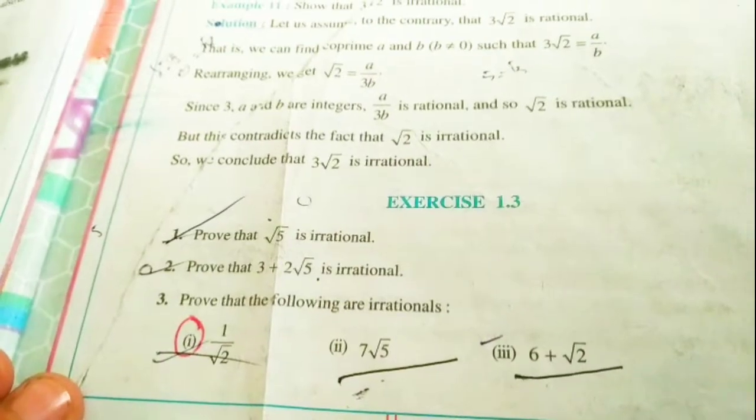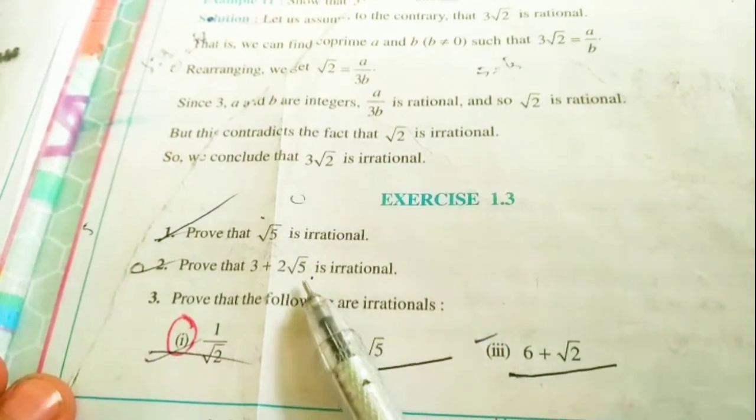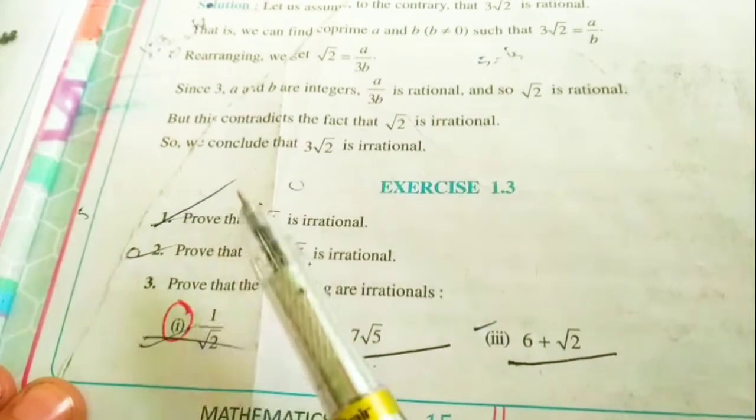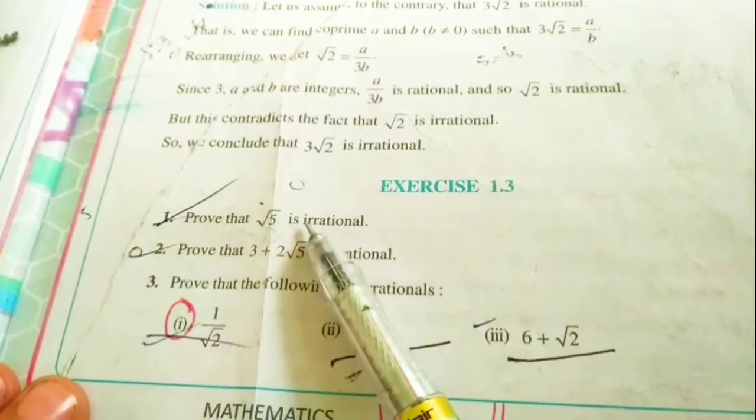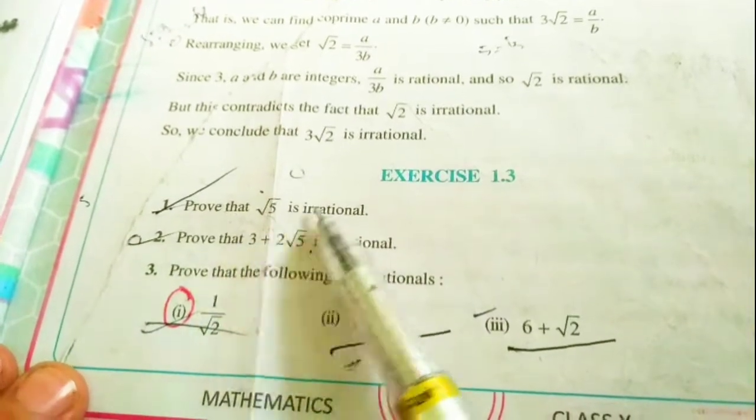Dear students, today we will study exercise 1.3, the first question. That is, prove that under root of 5 is irrational. We have to prove that under root of 5 is an irrational number.